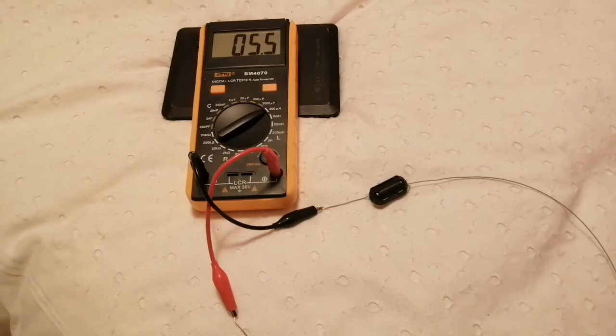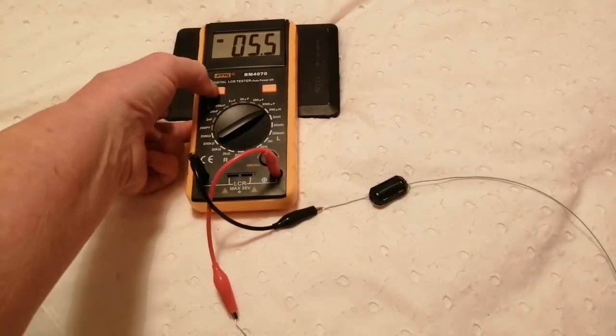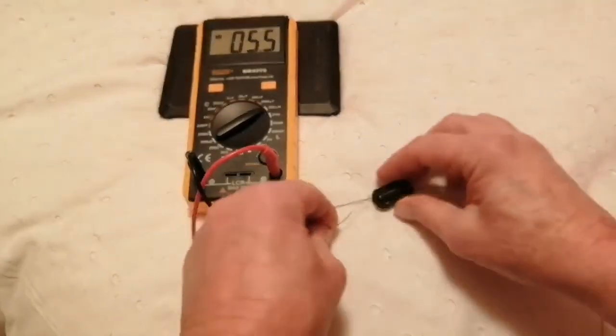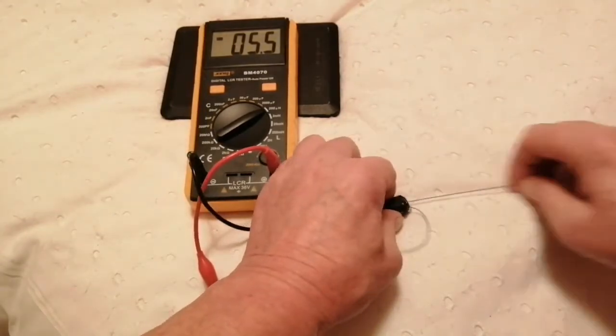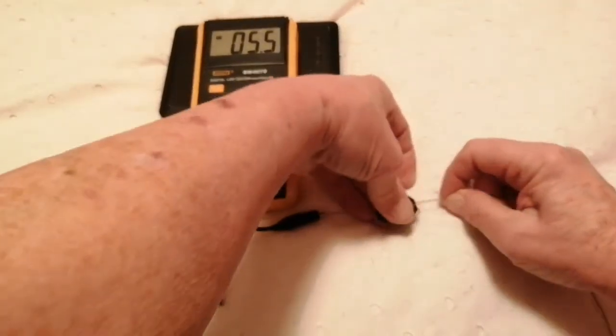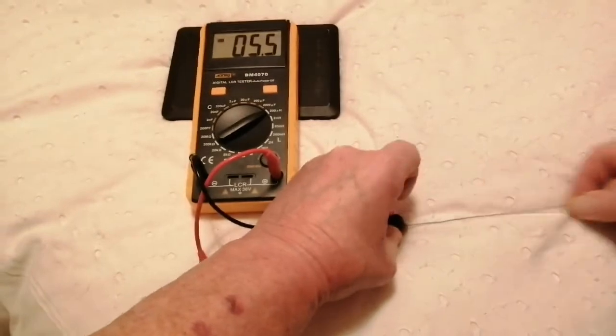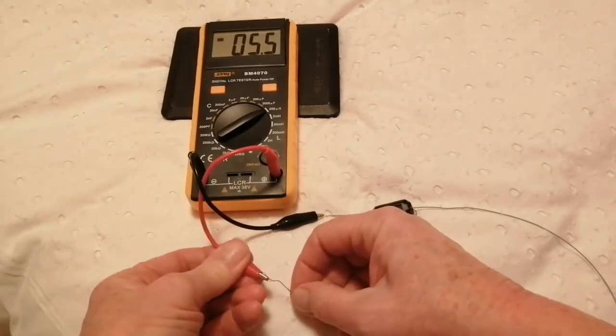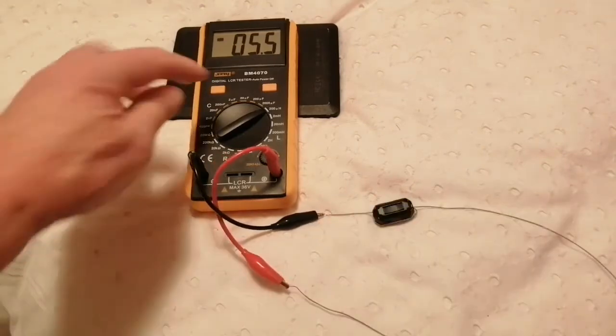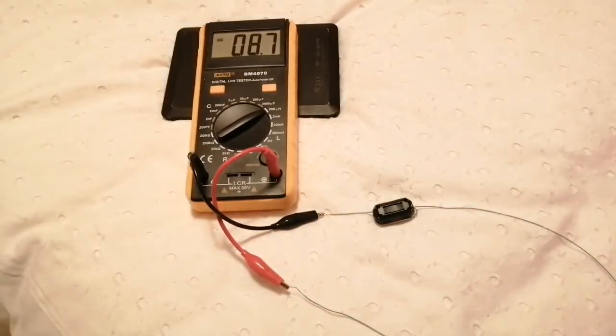For one complete turn which is two pass throughs, two passes through the core. I shall hold that value and pass another turn through. So this is three passes now, isn't it? Two turns, three passes. And it's gone up to 8.7 microhenries.